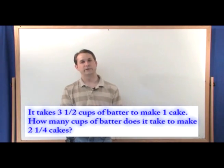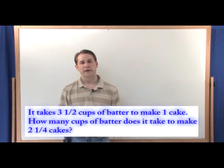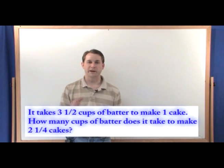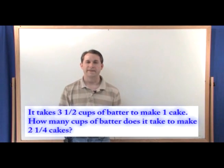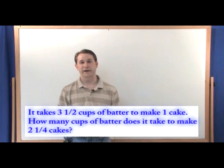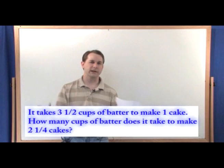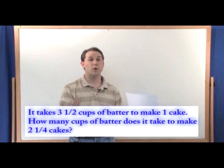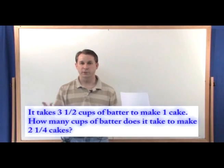But we're not making two cakes, we're making two and a quarter cakes. So all you do is instead of multiplying by two, you multiply by two and a quarter. And that will give you exactly the amount of batter you need. You're multiplying by however much cake you want, which is two and a quarter.